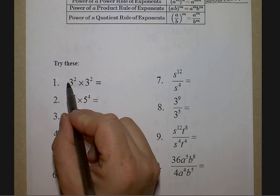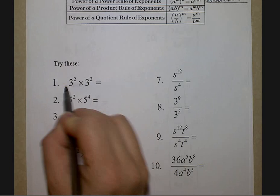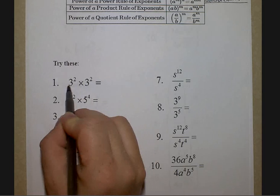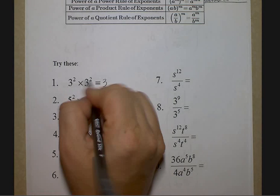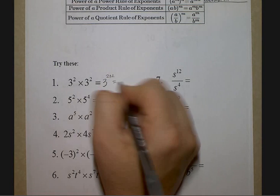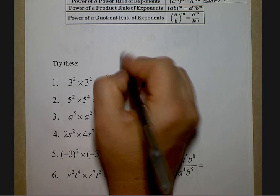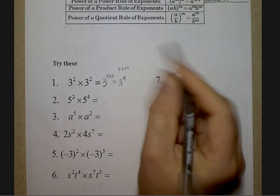Going down to the try-these problems. I have the same base — the base is three and I'm multiplying, so this is rule one. Same base: keep the base exactly the same. You don't multiply to make a nine. Keep the base the same and you add. Two plus two is four, so the answer is three to the fourth.